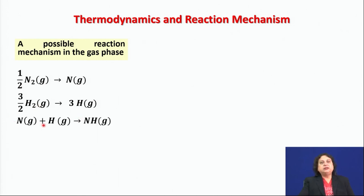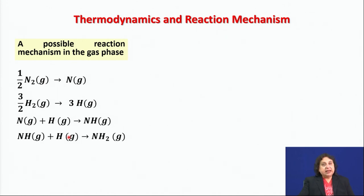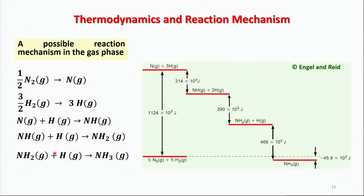The next step: one nitrogen atom combines with one hydrogen atom to give the transient species NH. Then NH combines with another hydrogen atom to produce NH₂ — another transient species — which finally combines with the last hydrogen atom to give ammonia gas.